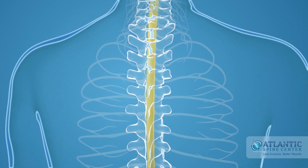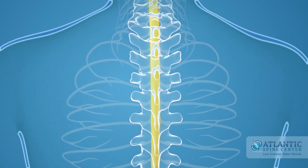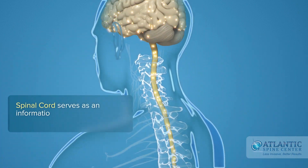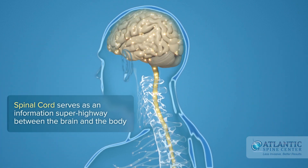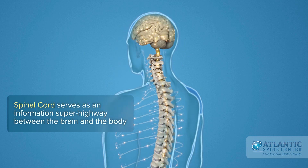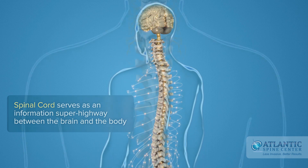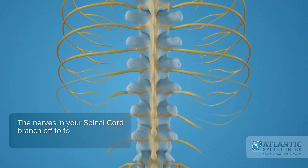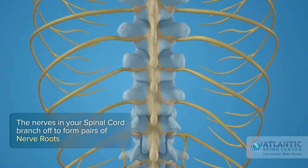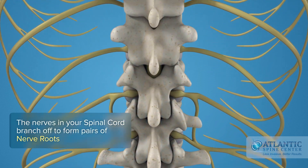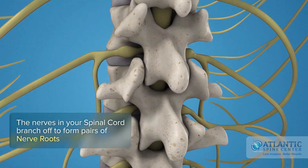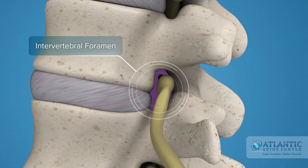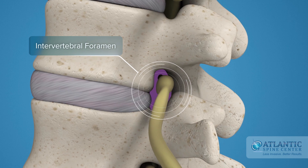The spinal cord is the major column of nerve tissue that is connected to the brain and serves as an information superhighway between the brain and the body. The nerves in your spinal cord branch off to form pairs of nerve roots that travel through the small openings between your vertebrae, the intervertebral foramens.